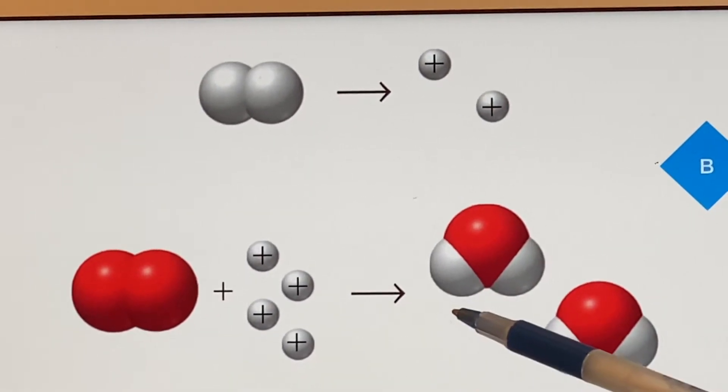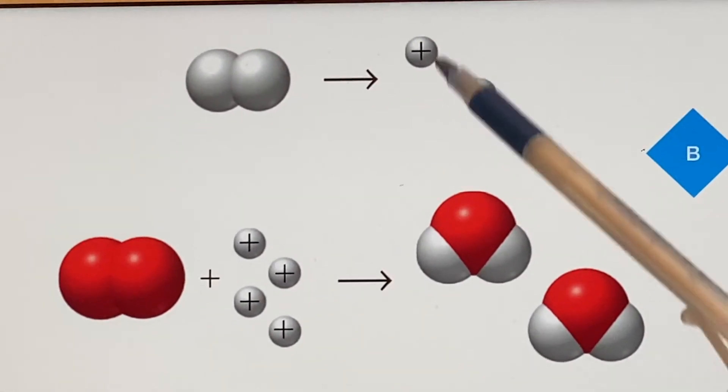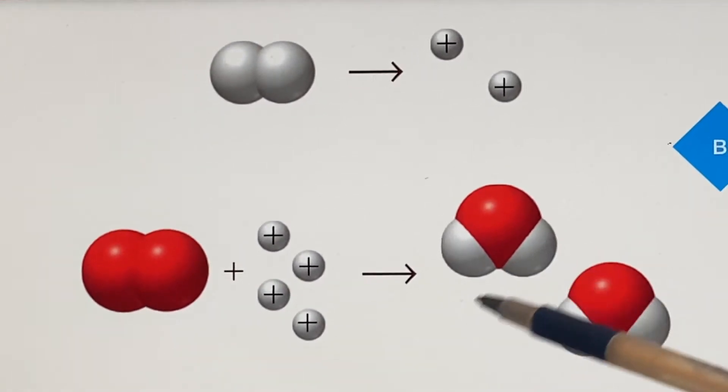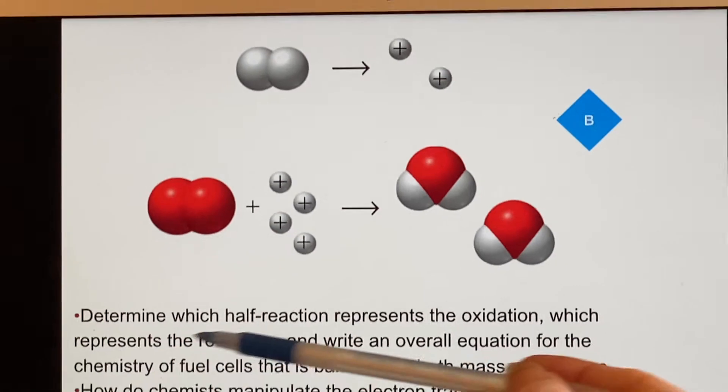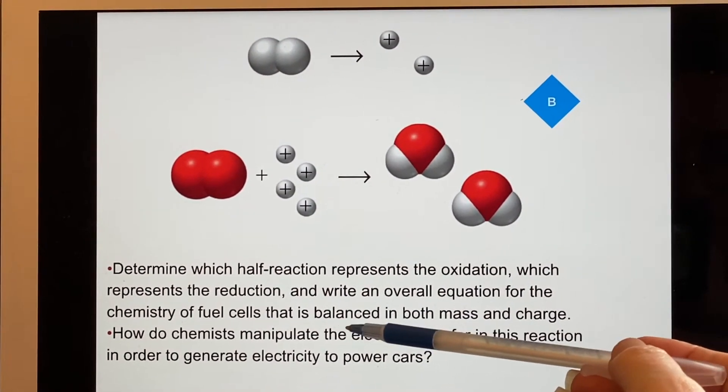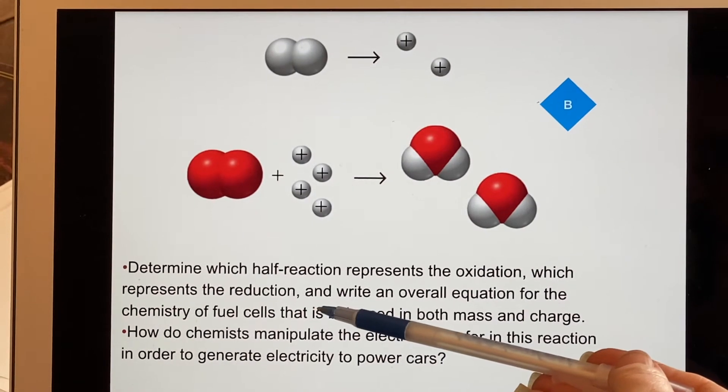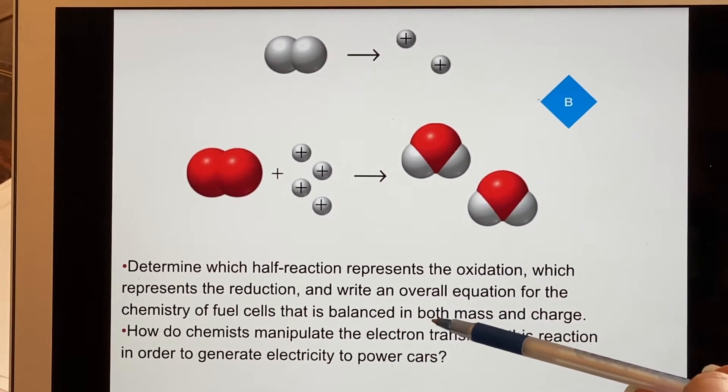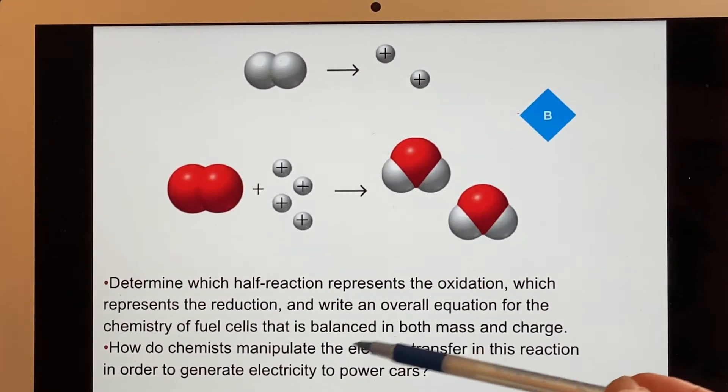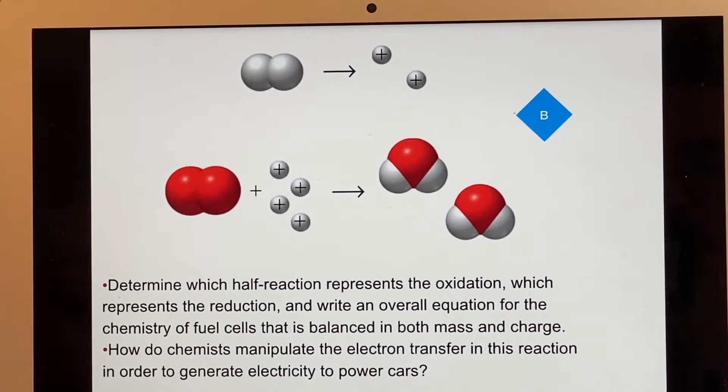We have to think about that, but I don't have a little symbol for electrons since they're so small. What we're saying is that each of these is considered a half reaction and we're supposed to try to come up with which one is an oxidation and which is a reduction, and write an overall equation. I'm going to have to combine these somehow and that's going to balance it in both mass and charge.